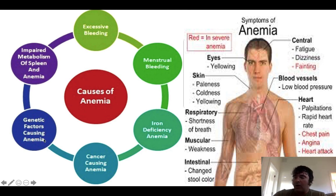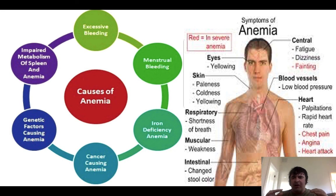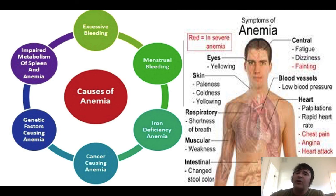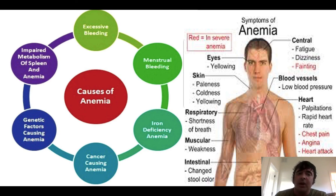Anemic patients often present with skin pallor, low heart rate, muscular weakness, and most commonly fatigue and lethargy. This makes sense: red blood cells transport oxygen to tissues; oxygen is necessary to burn glucose for energy. Fewer red blood cells means less oxygen in tissues, less energy production, and therefore fatigue. You diagnose anemia by measuring hematocrit — a low hematocrit means reduced red blood cells.